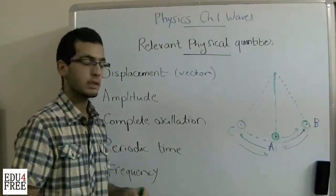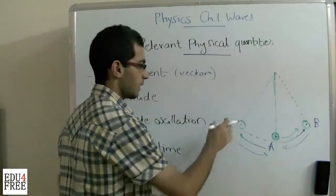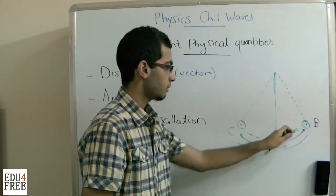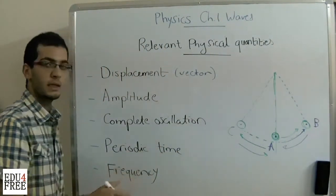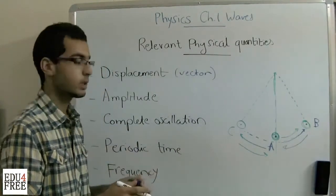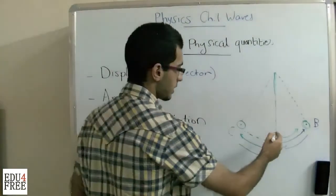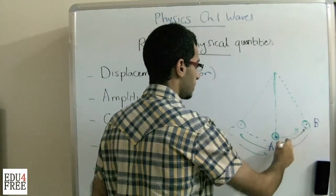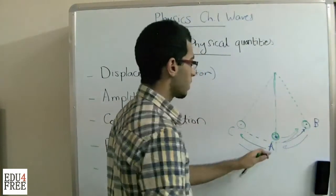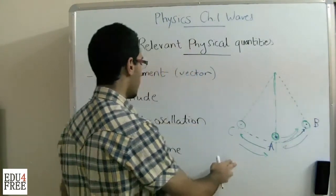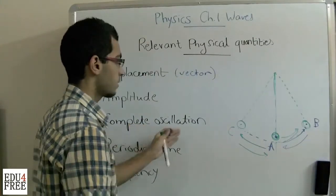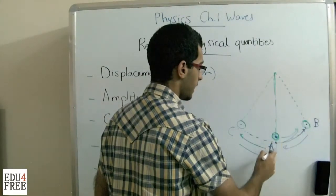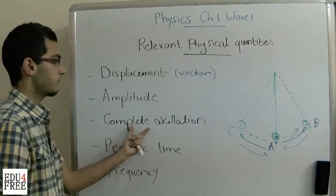A complete oscillation is the wave motion in the instant of time where the vibrating object passes by a point two times successively in the same phase. The same phase means in the same direction and the same displacement. As we notice, it moved from A to B, returned from B to A, then A to C, then C to A — it passes by point A two times successively. That's why it's called a complete oscillation.